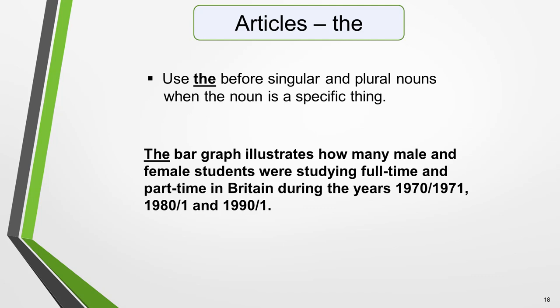Use 'the' before singular and plural nouns when the noun is a specific thing. For example: 'The bar graph illustrates how many male and female students were studying full-time and part-time in Britain during the years 1970–71, 1980–81, and 1990–91.'